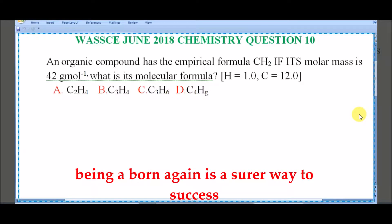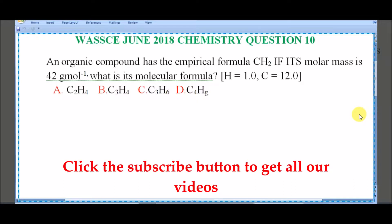An organic compound has the empirical formula CH2. If its molar mass is 42 gram per mole, what is its molecular formula, giving H to be equal to 1.0, C to be equal to 12.0?